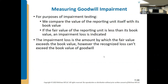For goodwill impairment, you look at the net book value after any depreciation, depletion, or amortization of that reporting unit and compare it with the current fair value. If the fair value of the reporting unit is less than that book value, you mark down the goodwill. The impairment loss is the amount by which fair value is lower than book value, but you can't have a loss greater than the goodwill itself.